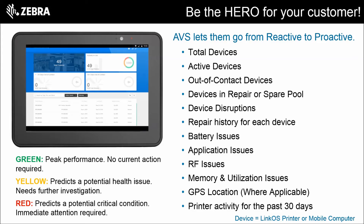AVS lets your customer go from reactive to proactive. If you look at the right side of the screen, you'll see all the different variables that are measured for printers and mobile computers — more specifically, LinkOS printers and mobile computers.